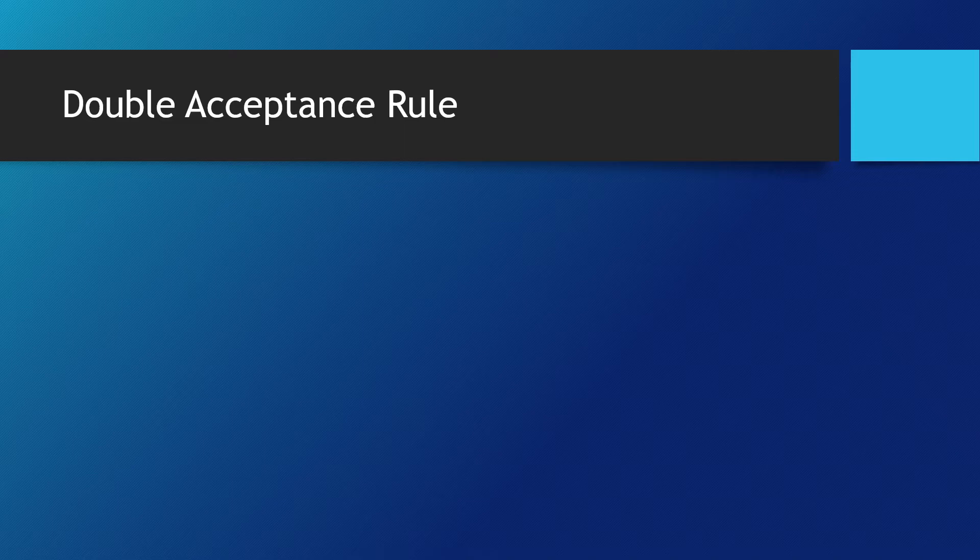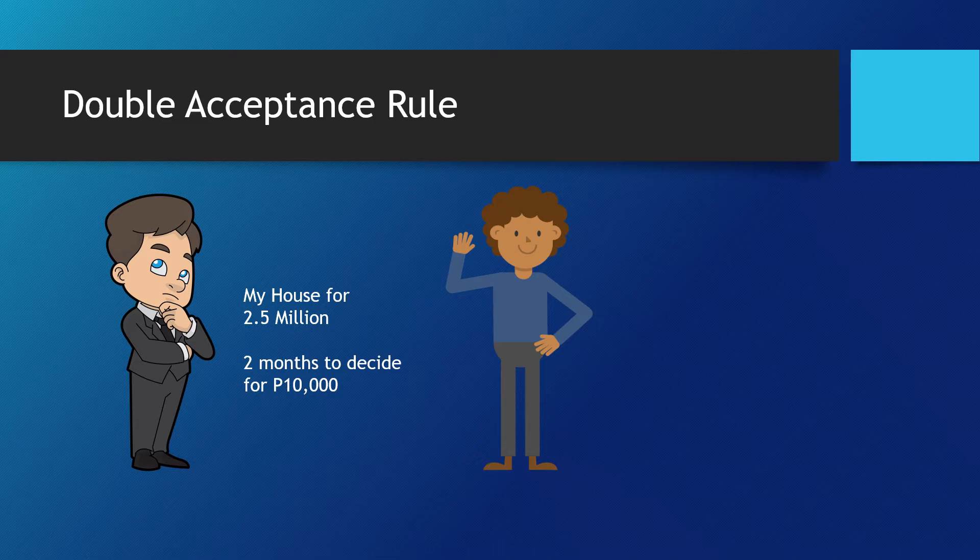For an option to rise to the level of a contract of sale, there must be a formal absolute acceptance of the option offer. This is what we call the double acceptance rule. Under the option contract, Mark may validly and effectively exercise his right by merely advising John of his decision to buy and expressing his readiness to pay the stipulated price as soon as John is able to execute the proper deed of sale.